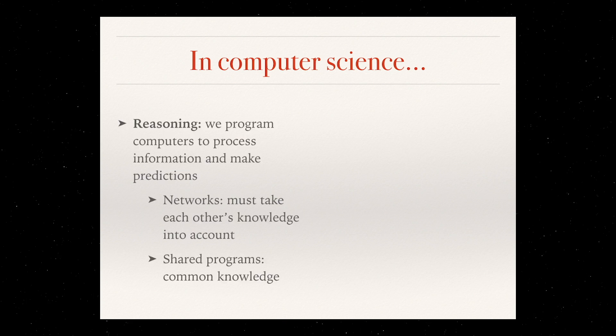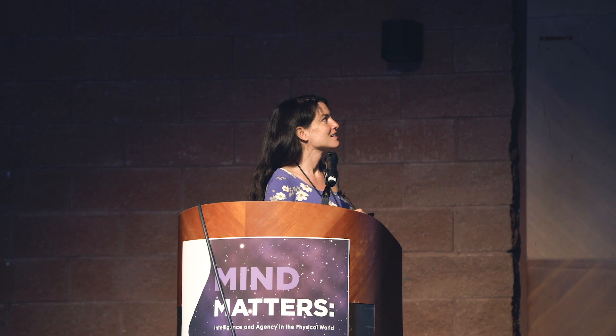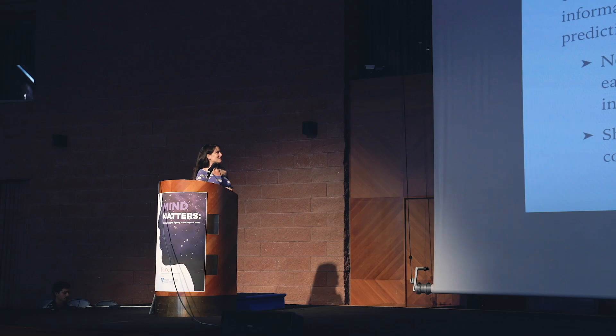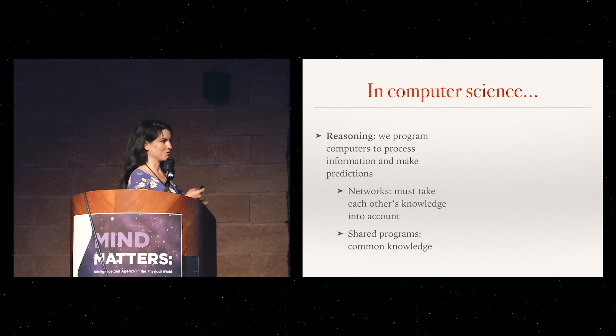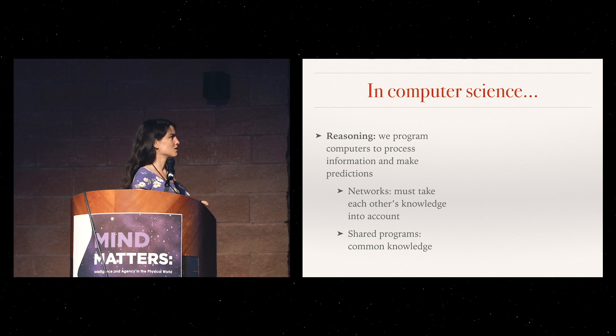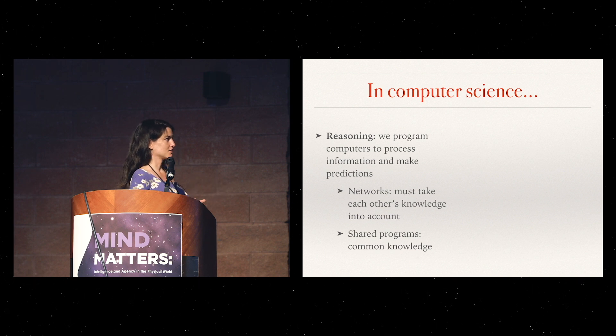In computer science, let's replace agents with computers. We still want computers to reason which means that we want to program them with some kind of consistent enough programs such that they can process information and make some predictions and then communicate these predictions to us. If you have a network of computers, be them classical computers or quantum computers or whatnot, they can in particular also take into account each other's knowledge.